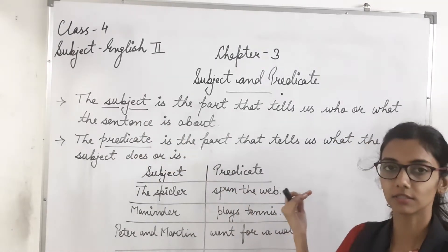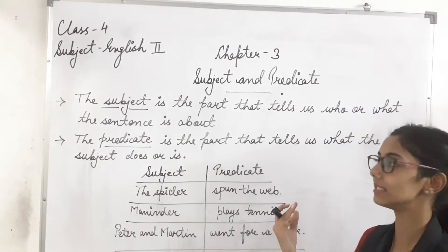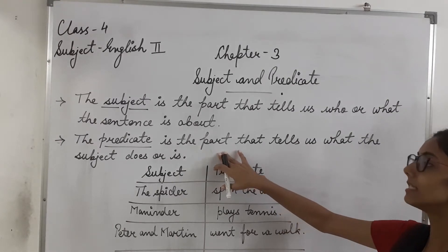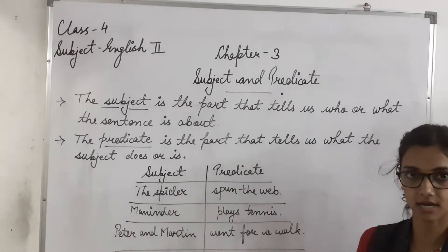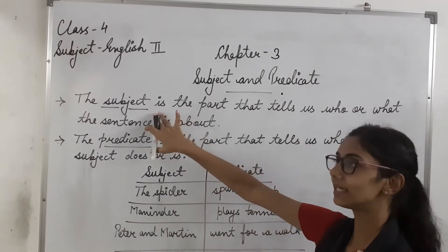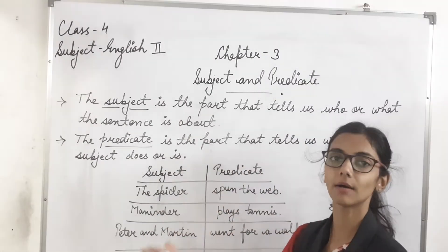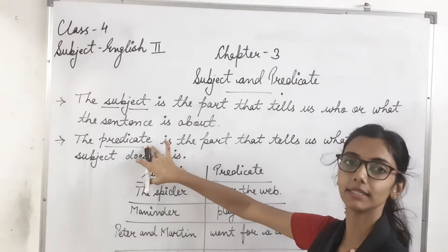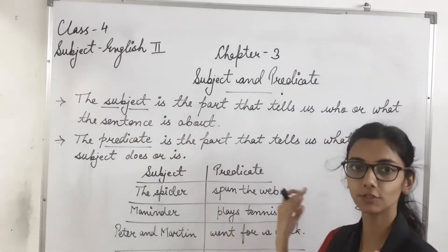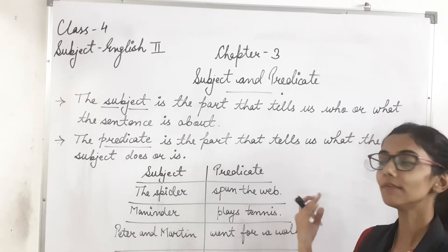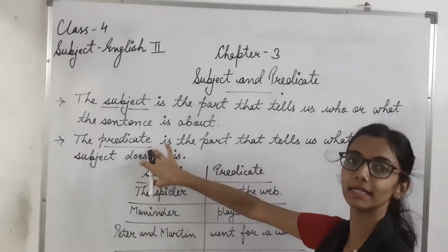And the rest of the sentence, jho baaki ka bachah hua sentence hai, jis meh yeh bataya ja raha hai ki subject kya kar raha hai. Jho humara subject activity karta hai, jho bhi kaam karta hai, usko hum predicate bolte hain. That means subject ke alawa jho baaki ka sentence hai, woh kya kehlata hai? Predicate kehlata hai.